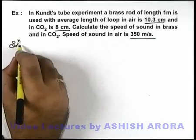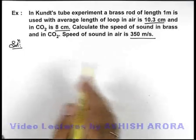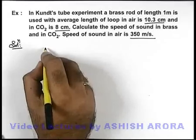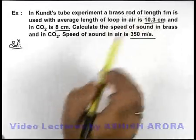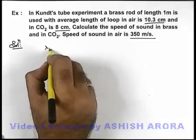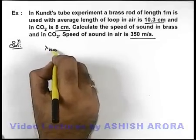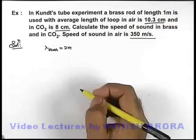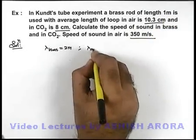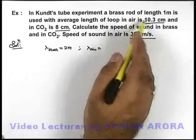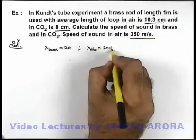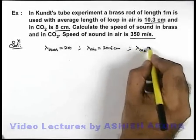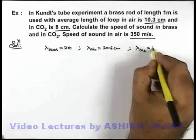We have already studied the application of Kundt's tube for comparison of speed of sound. Here we know well that as brass rod is given of length 1 meter, then we can write lambda of sound in brass can be written as 2 meters, as lambda by 2 is 1 meter. Similarly, lambda in air can be taken as 10.3 multiplied by 2, it is 20.6 centimeters, and lambda in carbon dioxide will be 8 into 2, this is 16 centimeters.